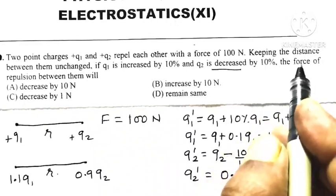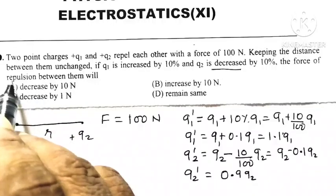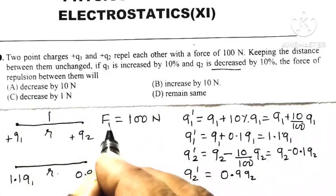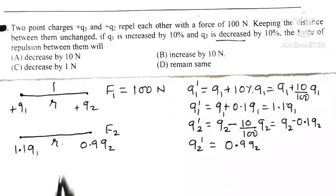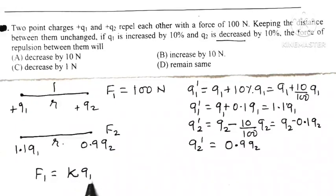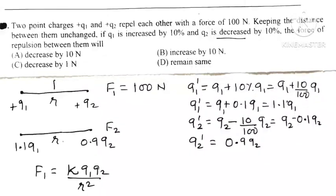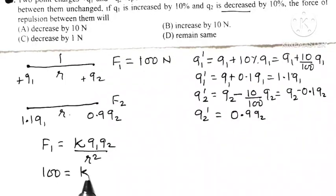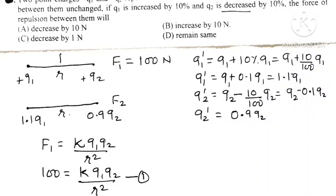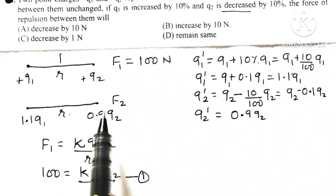We want to find the new force of repulsion. Let F1 be the force in the first case and F2 in the second case. For the first case, F1 equals K times Q1 Q2 divided by R squared, which equals 100 Newton — this is equation number 1.